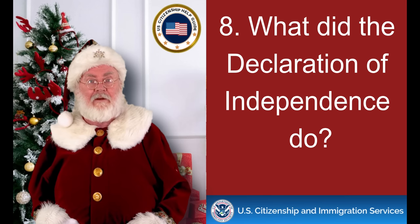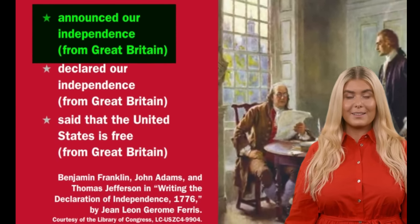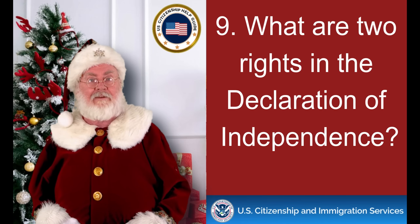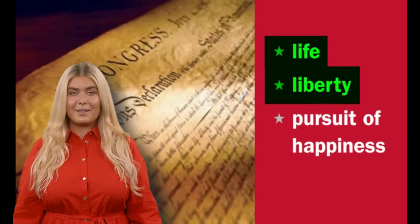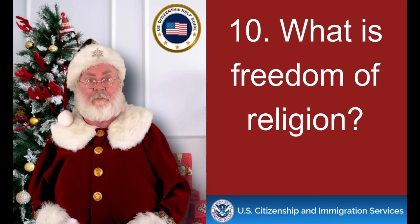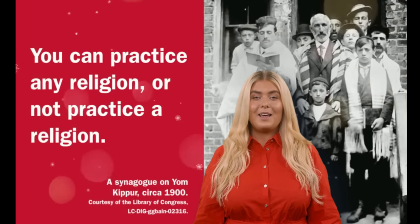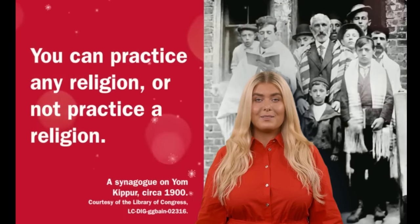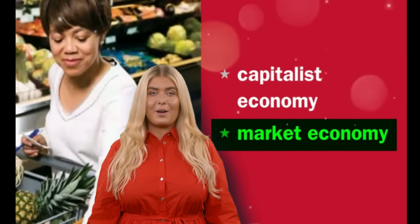What did the Declaration of Independence do? Announced our independence from Great Britain. What are two rights in the Declaration of Independence? Life and liberty. What is freedom of religion? You can practice any religion or not practice a religion. What is the economic system in the United States? Market economy.